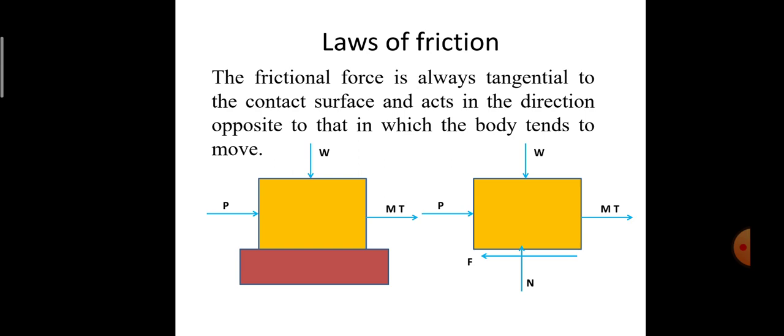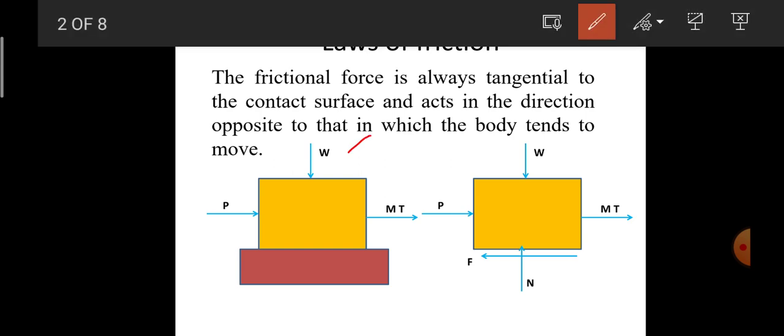The first law of friction states that the frictional force is always tangential to the contact surface and always acts in the direction opposite to that which the body tends to move. For easy understanding, I have a diagrammatic illustration wherein W is the self-weight of the object resting on the surface, and P represents the external load which is pushing the object, resulting in motion along the direction of the applied load.